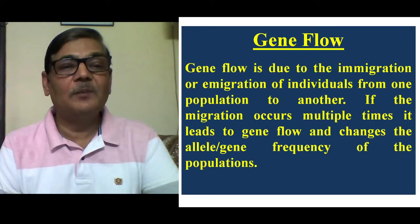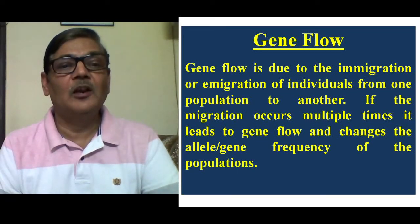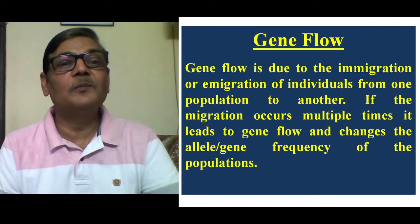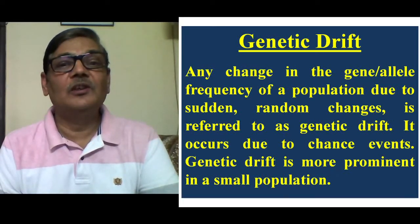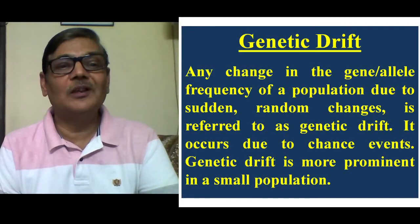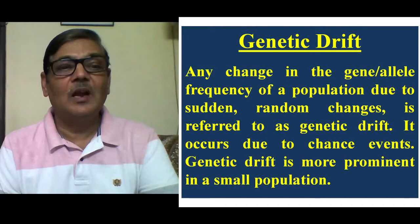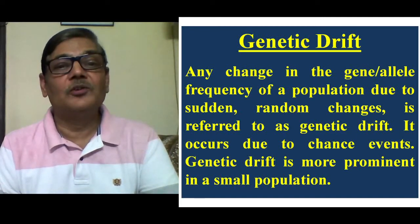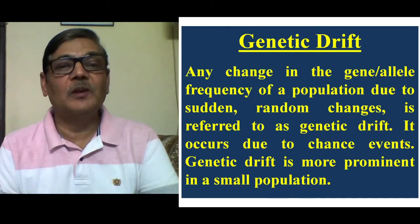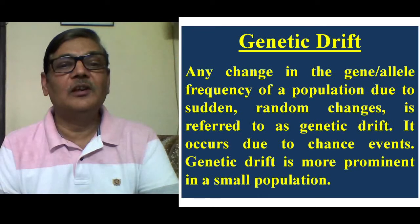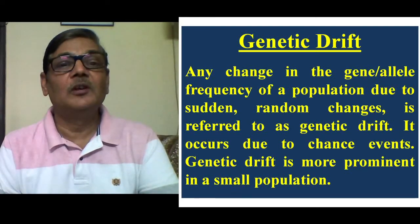Gene flow happens in case of animals as well as plants and other kinds of organisms, because in case of plants, even pollen grains may migrate to long distances. Then genetic drift — any change in the gene or allele frequency of a population due to sudden or random changes is referred to as genetic drift. It occurs due to chance events and is more prominent in a small population. We know about founder effect: if a new population is founded at a place by just a few individuals, then that population may be genetically quite different from the parental population. Bottleneck effect is another way by which genetic drift actually occurs.